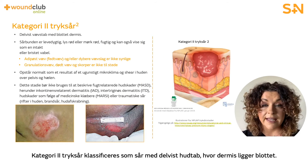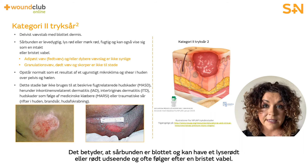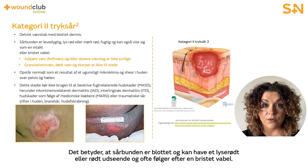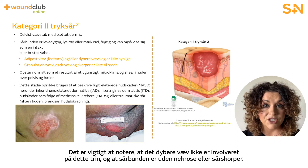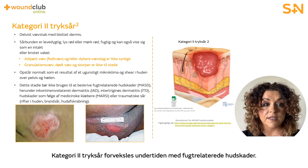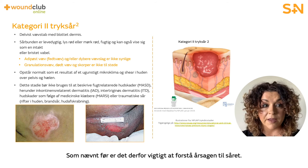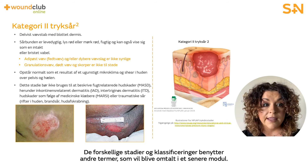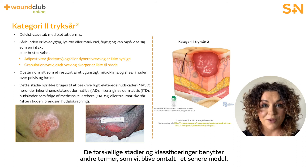Category two pressure ulcers are classified as having partial thickness loss of skin where the dermis is exposed. The wound bed is exposed and may appear as pink or red, often following the breakdown or rupture of a blister. There will be no deeper tissue involvement at this stage and the wound bed will be free of slough and eschar. Sometimes stage two pressure ulcers can be confused with moisture associated skin damage; therefore, understanding the cause is really important. There are separate staging and classification terms for moisture associated skin damage, which will be covered in a future Wound Club online module.